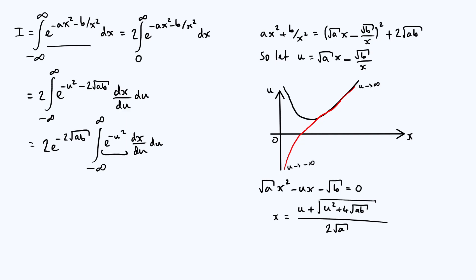Now the derivative of an even function is odd, and the derivative of an odd function is even, and so if we only care about the even part of dx by du, that means we only care about the odd part of x as a function of u. Now if you go back to this expression down here, which is x as a function of u, you've got this square root term, the square root of u squared plus 4 root ab over 2 root a, that is an even function of u, because it just contains a u squared, whereas this u over 2 root a is odd, okay?